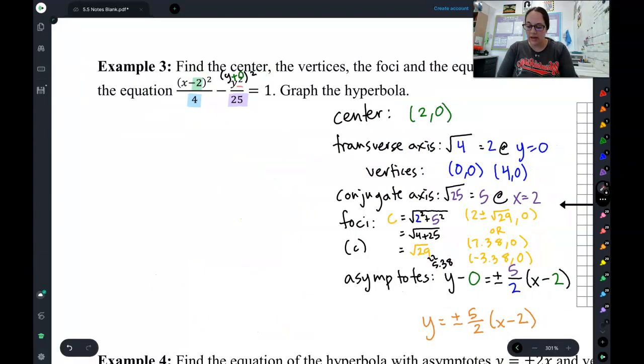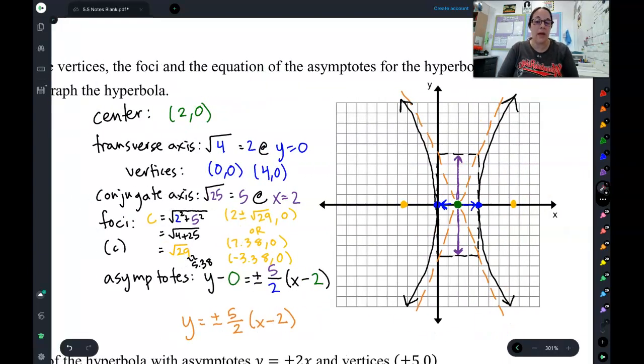Then, to find my conjugate axis, take the second number, square root it, and because that second number was paired with the y, it goes up and down. So, now I've got my conjugate and my transverse axis, I labeled where they're at, and from there created my guide rectangle, which I could then use to make my asymptotes.